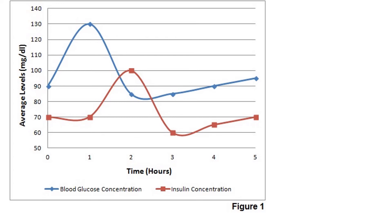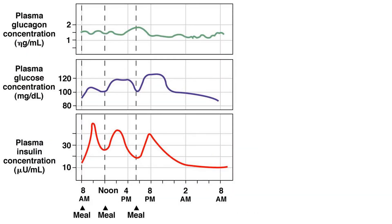Sometimes you'll find that the data is split into more than one graph, but they should all share the same time scale. The idea is the same: you're looking for correlations, comparisons, and relationships. And for an explain or comment question, you're identifying reasons for those changes, differences, or relationships.